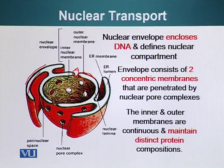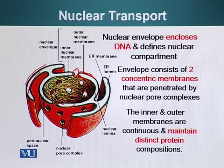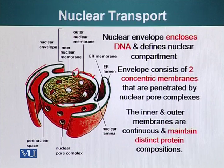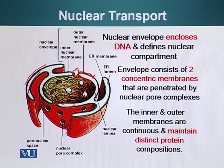The inner and outer membranes are continuous with each other but maintain distinct protein compositions. Although they are in continuation of each other, there are specific proteins present only in the outer membrane and others present only in the inner membrane. This is roughly the anatomy of the nucleus, and we will talk about the nuclear pore anatomy in just a little bit.